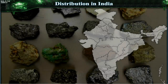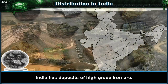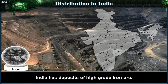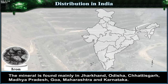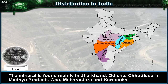Distribution in India: Iron. India has deposits of high-grade iron ore. The mineral is found mainly in Jharkhand, Odisha, Chhattisgarh, Madhya Pradesh, Goa, Maharashtra and Karnataka.